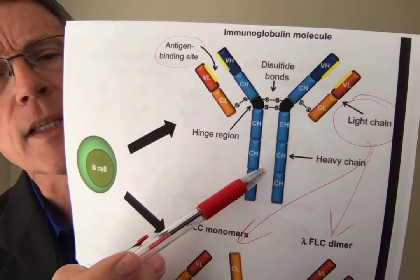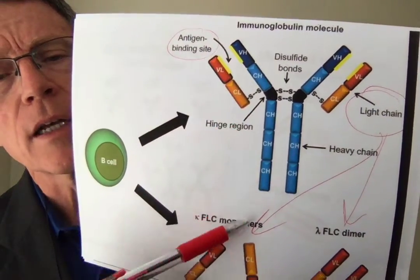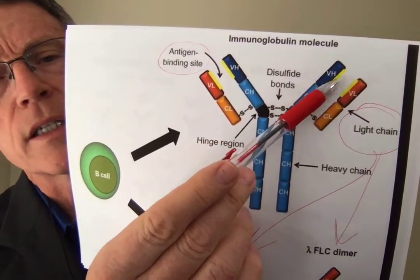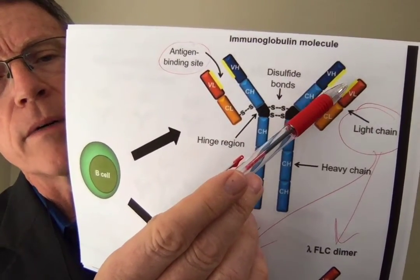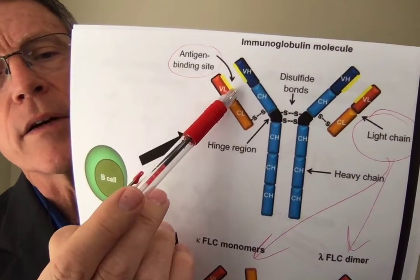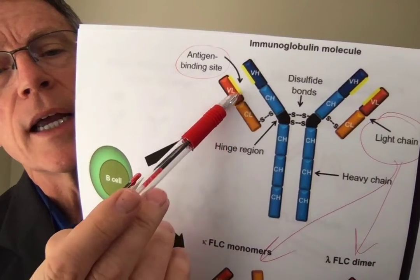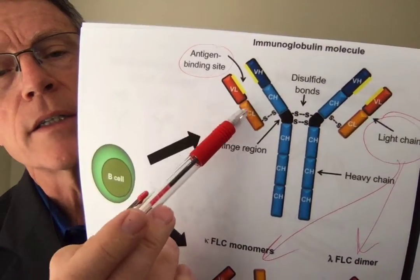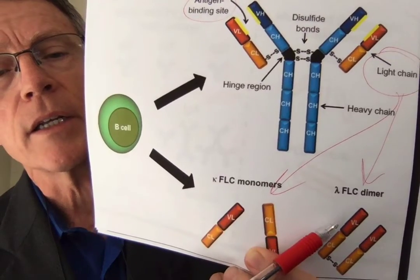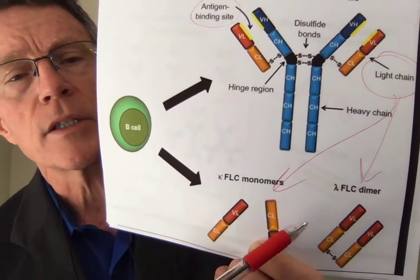Now this is what a typical antibody looks like. The business end — the antigen receptor site — is right here between what's called the heavy chain and the light chain. There are two types of light chains: kappa light chain and lambda light chain. We'll talk about those a little bit later too.